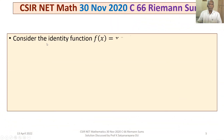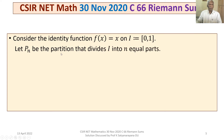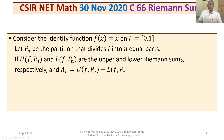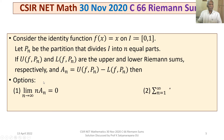The problem is: consider the identity function f(x) = x on the closed and bounded unit interval I = [0,1]. Let Pn be the partition that divides I into n equal parts. If U(f, Pn) and L(f, Pn) are the upper and lower Riemann sums respectively, and An = U(f, Pn) minus L(f, Pn), then the four options are given to us.